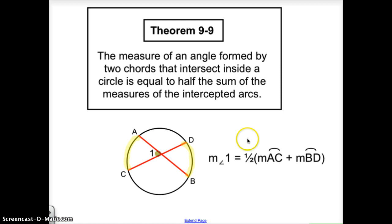The first theorem we're going to talk about is to find an angle created on the interior of the circle by two chords. The measure of the angle formed by two chords that intersect inside the circle is equal to half the sum of the measures of the intercepted arcs.